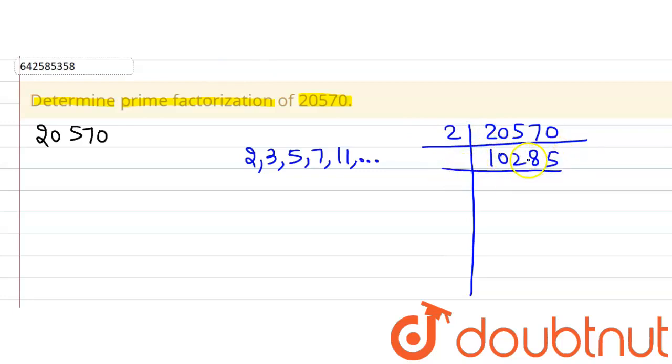This is not divisible by 2 so we will move to the next prime number that is 3. This is also not divisible by 3 so we will move to the next prime number that is 5. Dividing 10,285 by 5 we will get 2,057.